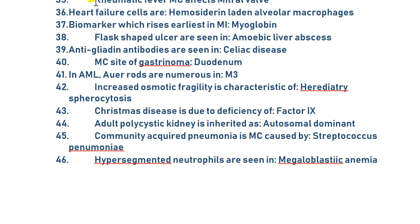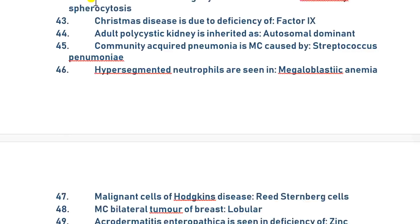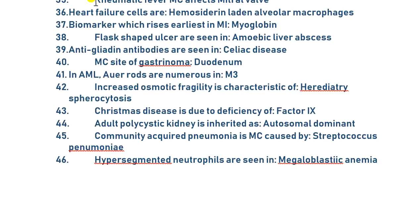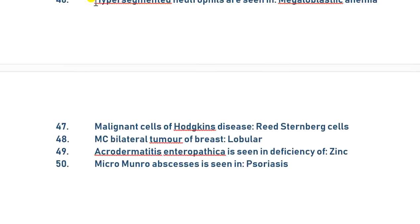Community-acquired pneumonia is most commonly caused by Streptococcus pneumoniae. Hypersegmented neutrophils are seen in megaloblastic anemia. Malignant source — the hallmark cells of Hodgkin's disease are Reed-Sternberg cells. Most common bilateral tumor of the breast is lobular carcinoma — lobular is always bilateral, which is important. Acrodermatitis enteropathica is seen in deficiency of zinc. Within five minutes we finish 50 bits — you can just revise them.